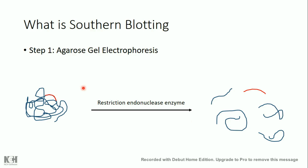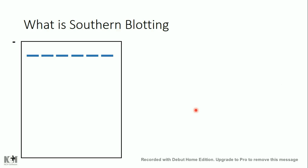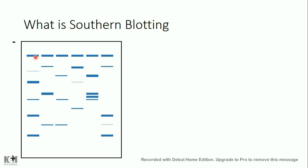To decide which endonuclease enzyme to use, I should know the sequence I have, because there are many restriction endonuclease enzymes — each one detects a specific sequence on the genome and cuts the DNA downstream of that sequence. So in order to choose the restriction enzyme, I should know the sequence of the gene of interest. After digesting the DNA, I apply this sample on the agarose gel using an electrical current, and the DNA sequences will be separated according to their length.